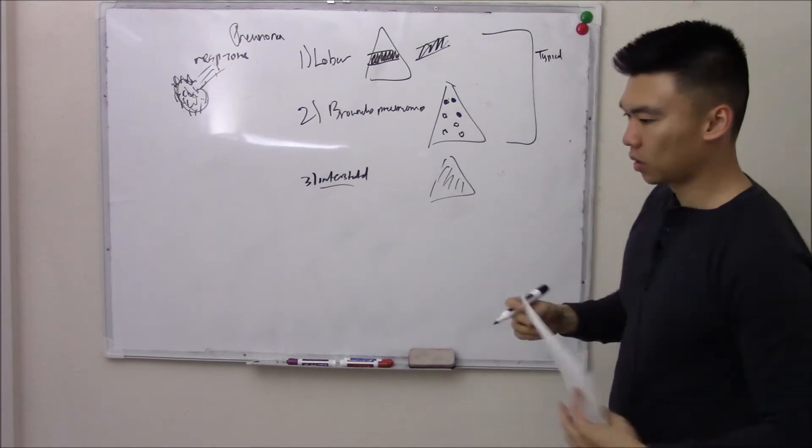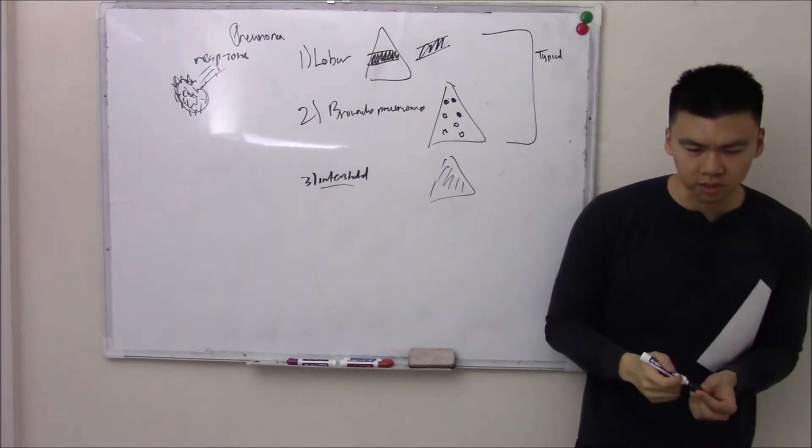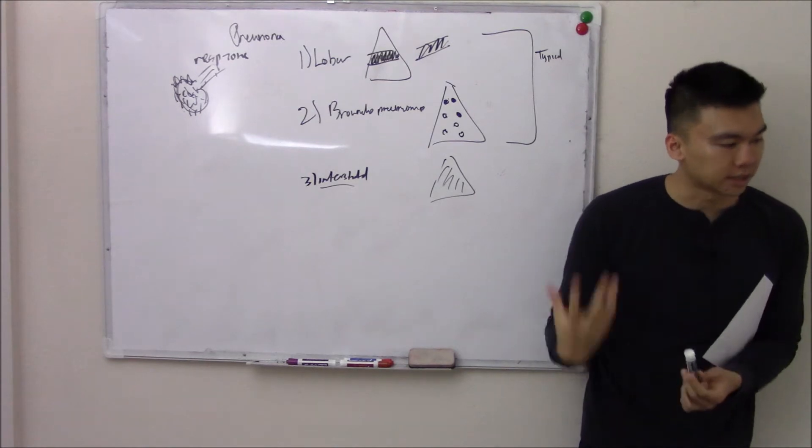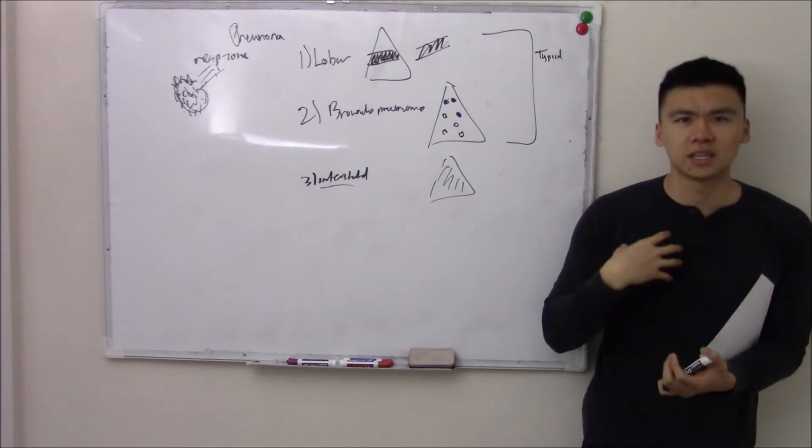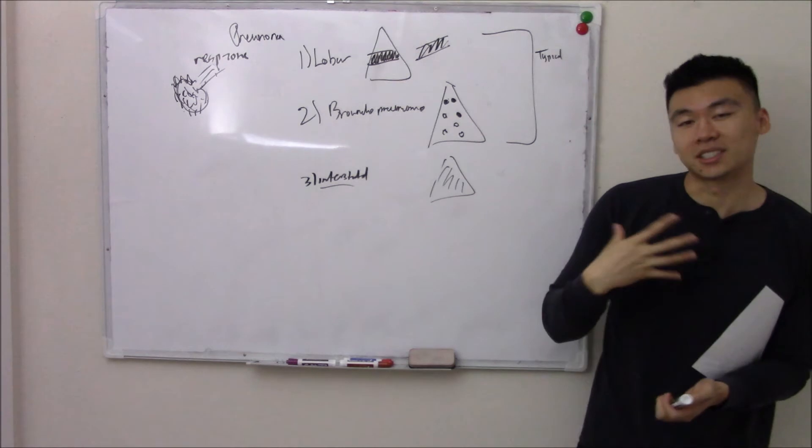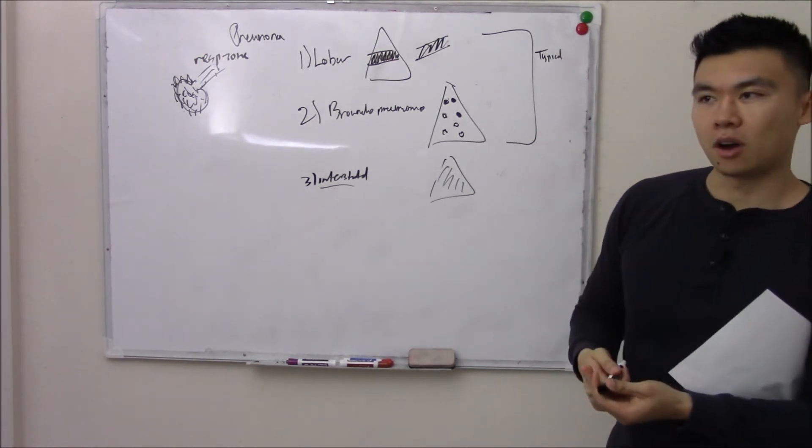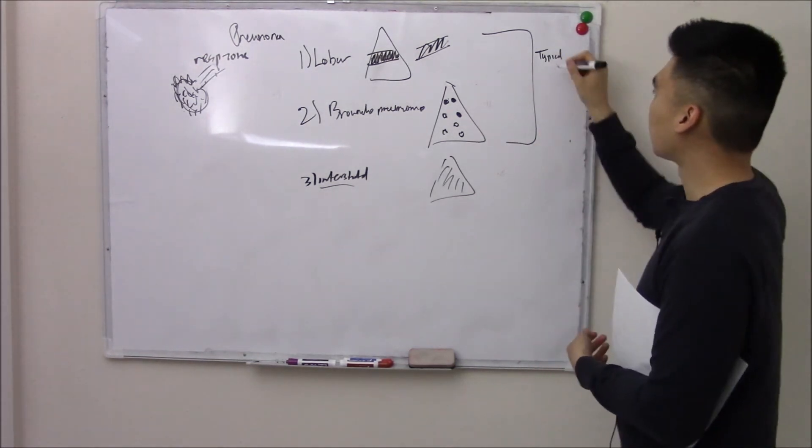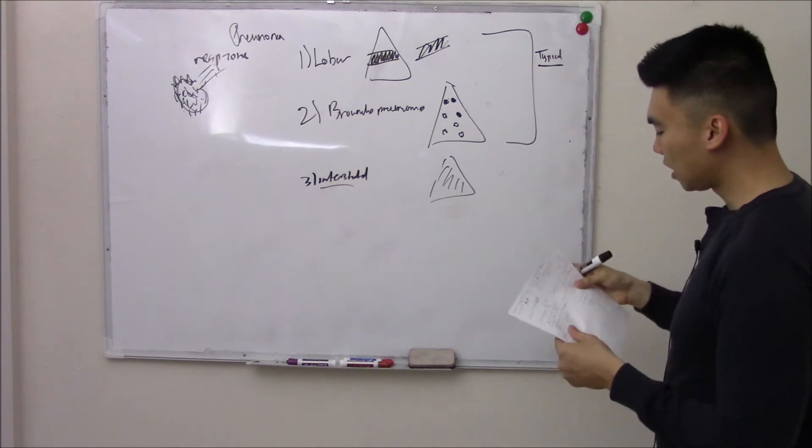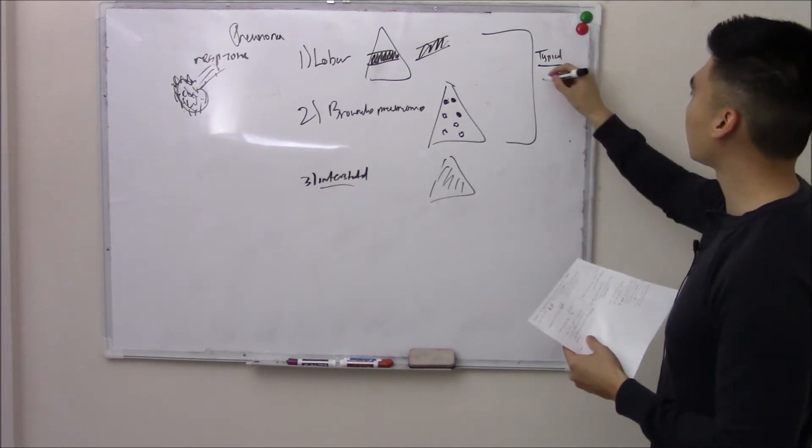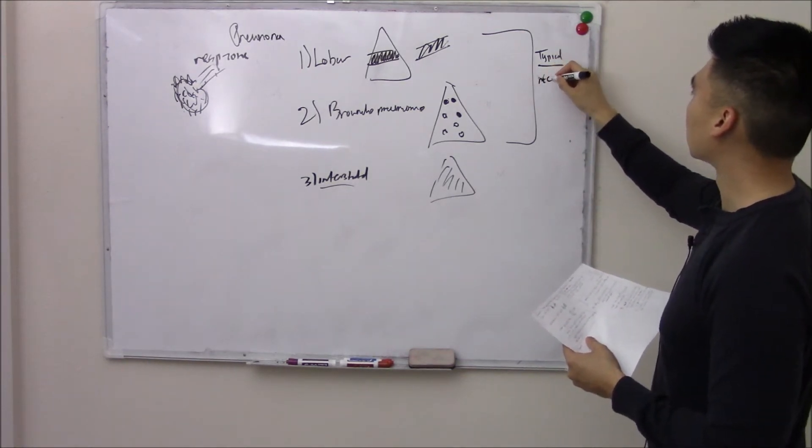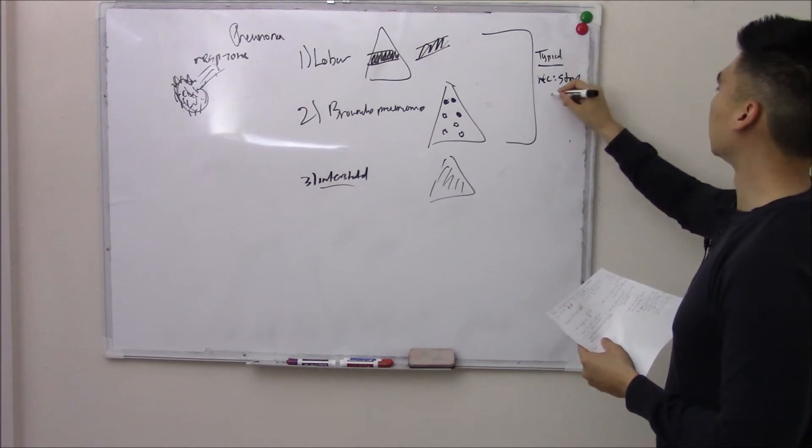And because it's typical, it shows all the signs we usually associate with pneumonia. You get really sick really fast. You have a fever, you have a productive cough, coughing up green stuff all the time. You're having chest pain. All these signs we think are typical. So we call this typical pneumonia. And the most common bug is going to be your strep pneumo.